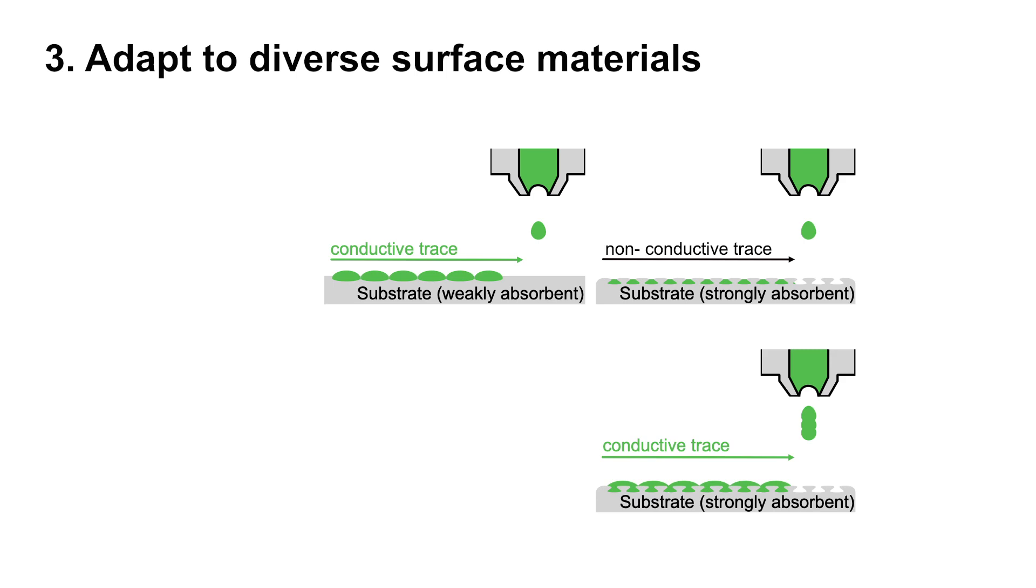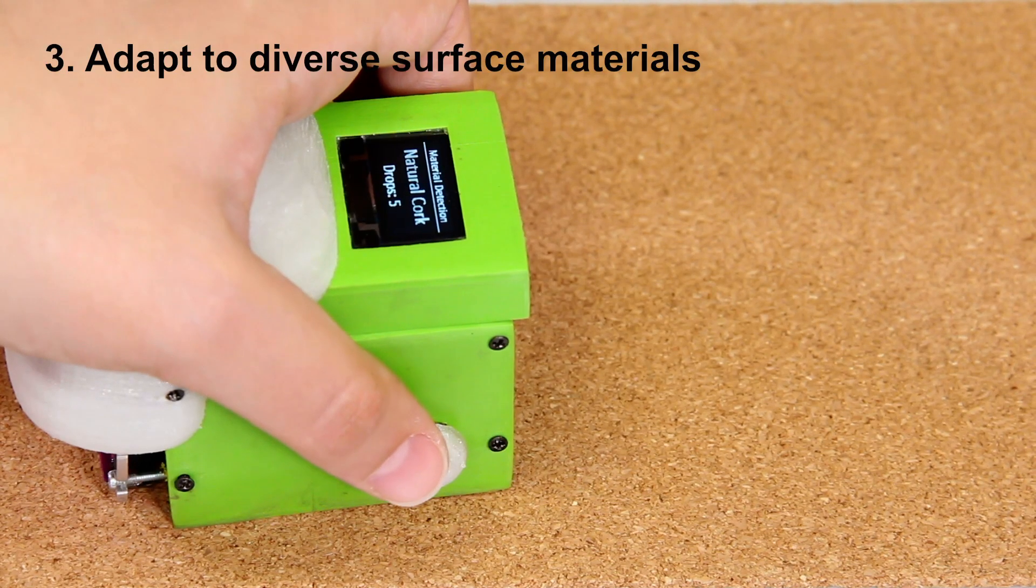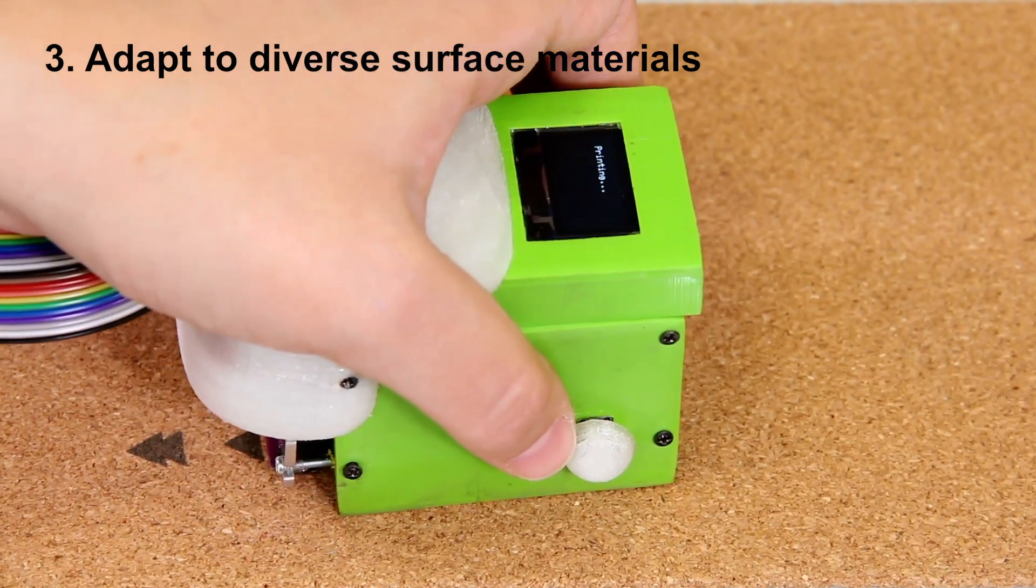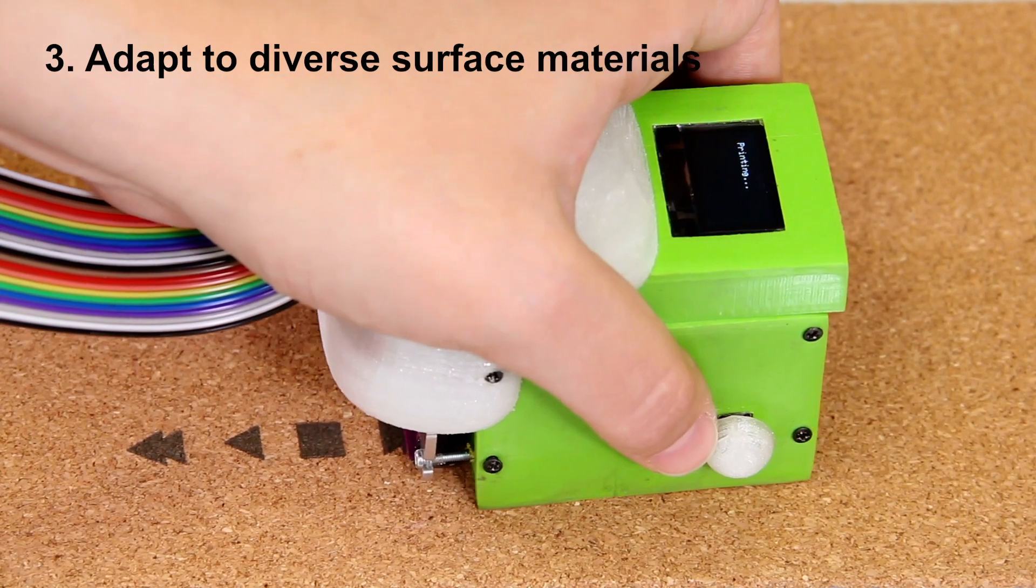To solve this problem, the size of the droplets should be adjusted to the absorption power of the substrate. Using the built-in optical sensor, printed sketch continuously monitors the material and dynamically adjusts the size of the droplets.